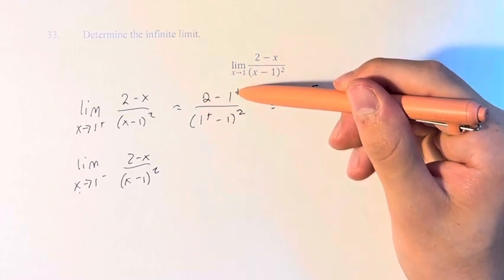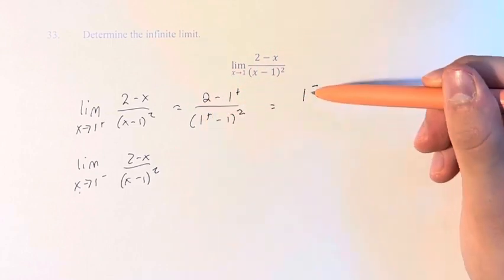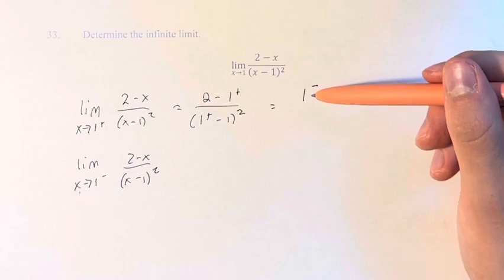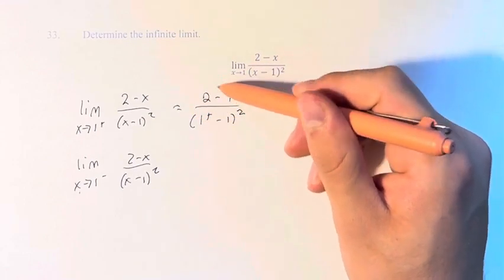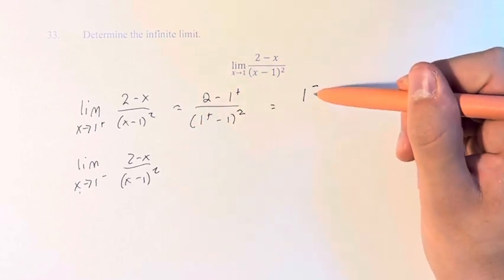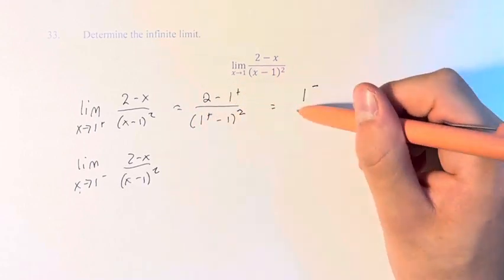We are subtracting numbers that are slightly greater than 1, so we're getting numbers that are slightly less than 1. If you're adding, this would be 2 plus 1 equals 3, also from the right. But since we're subtracting, it's from the left.